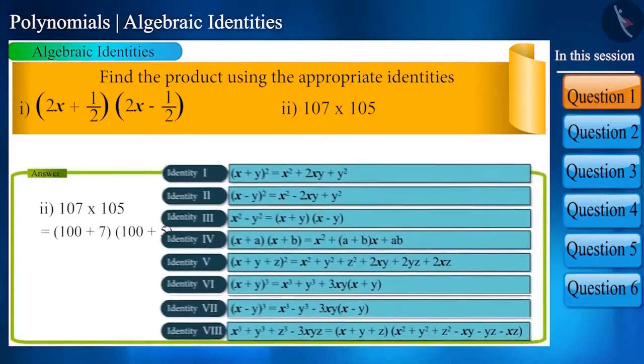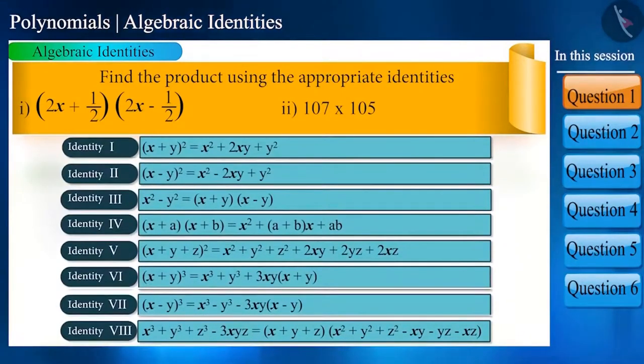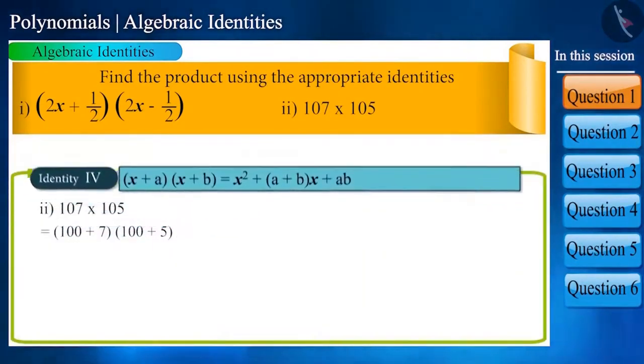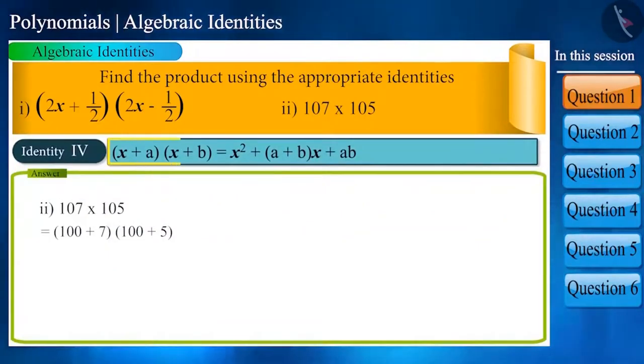it will look like identity 4: (x + a)(x + b) is equal to x square plus (a + b) into x plus ab, where x is 100 and a and b are 7 and 5 respectively.